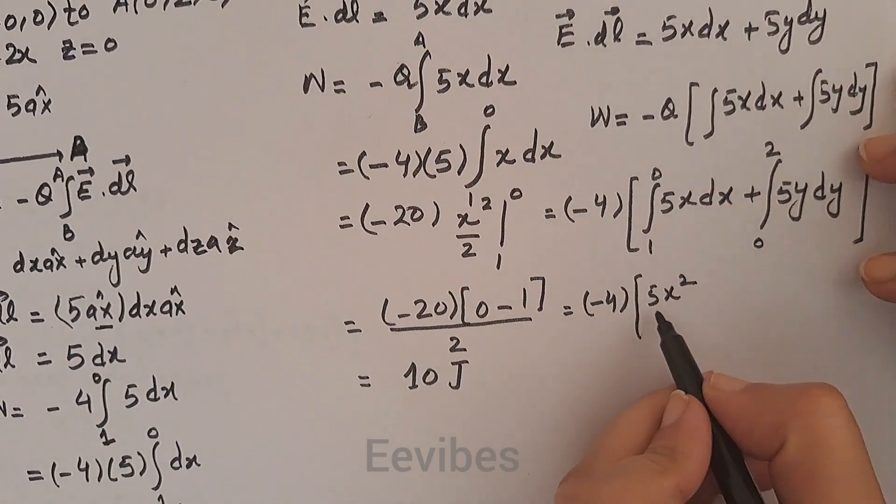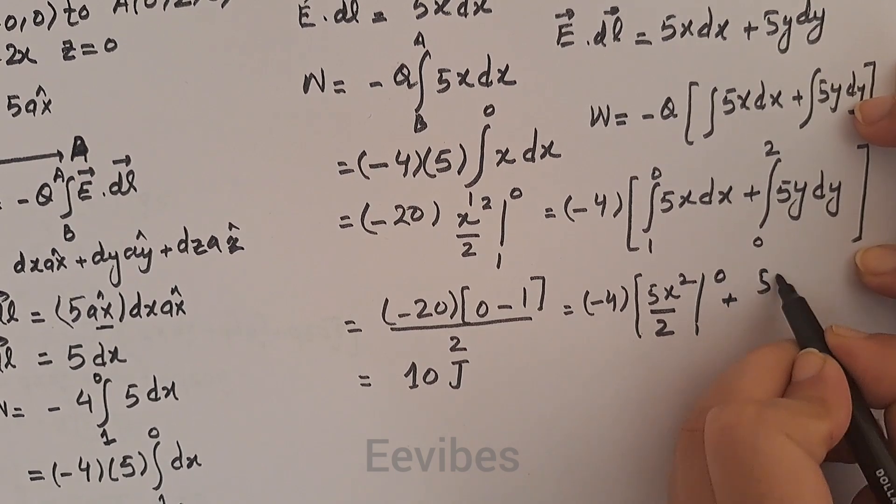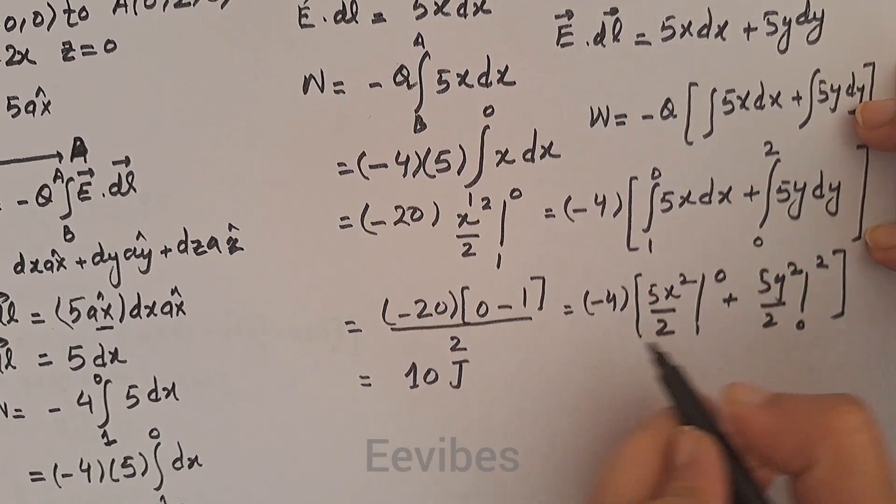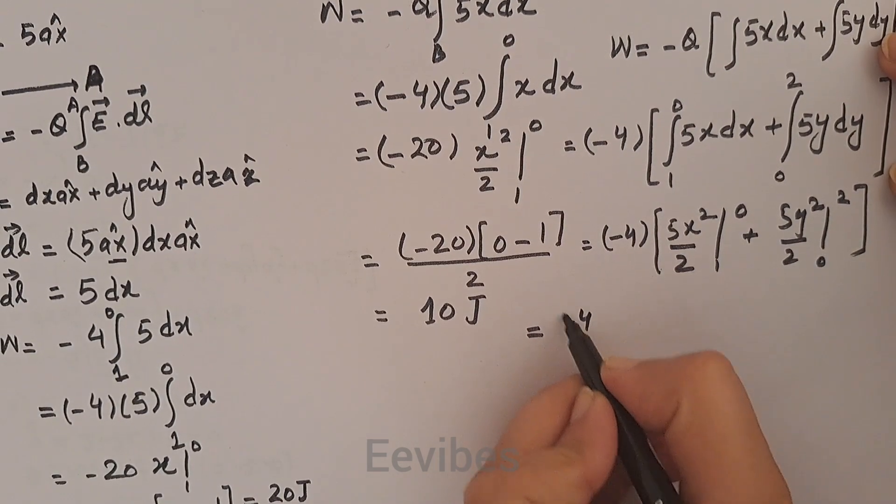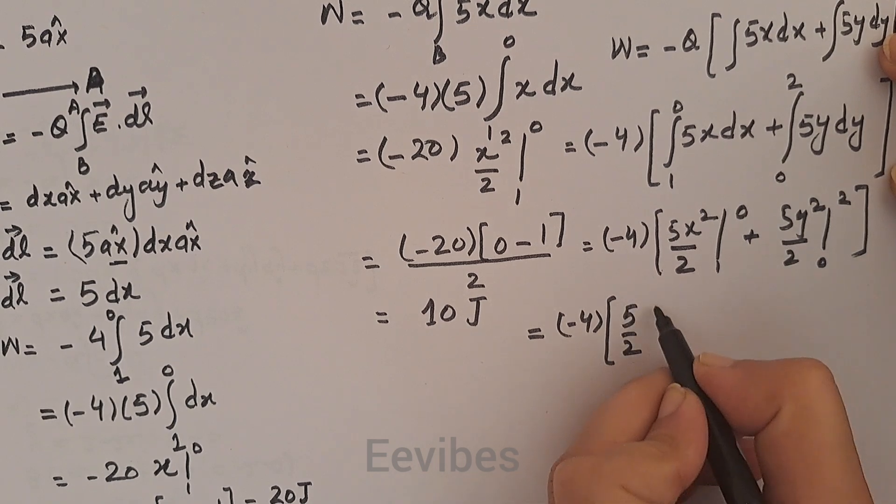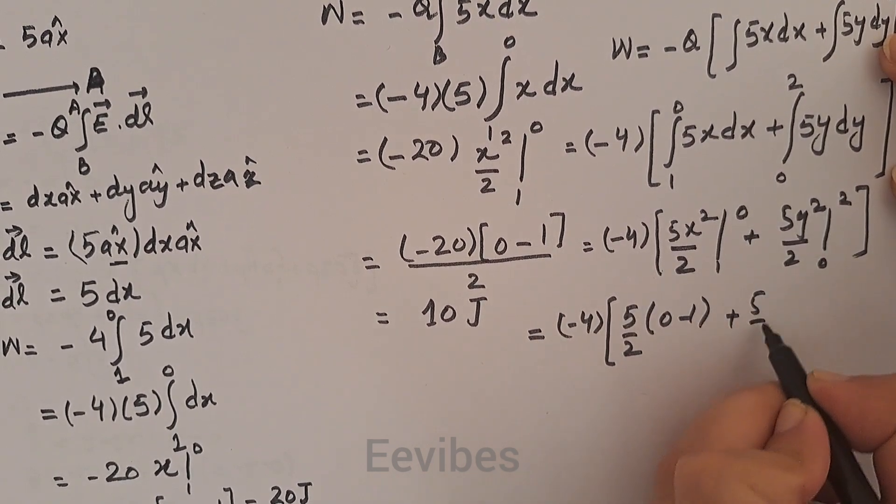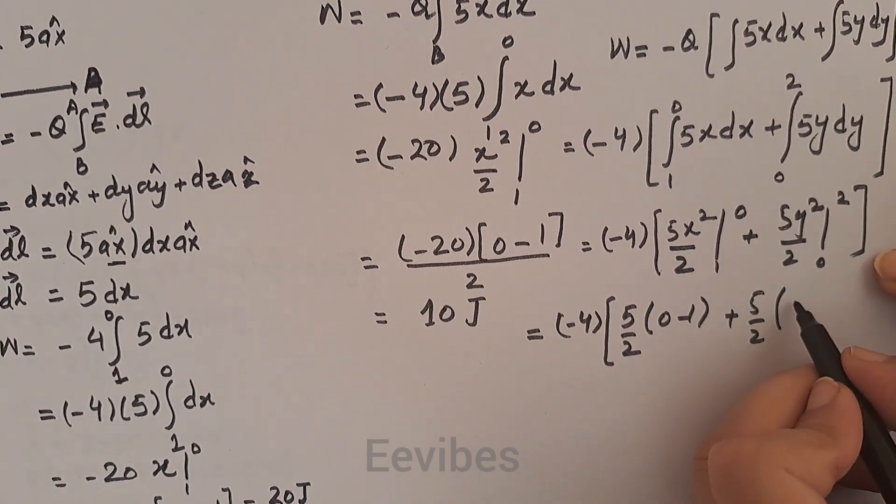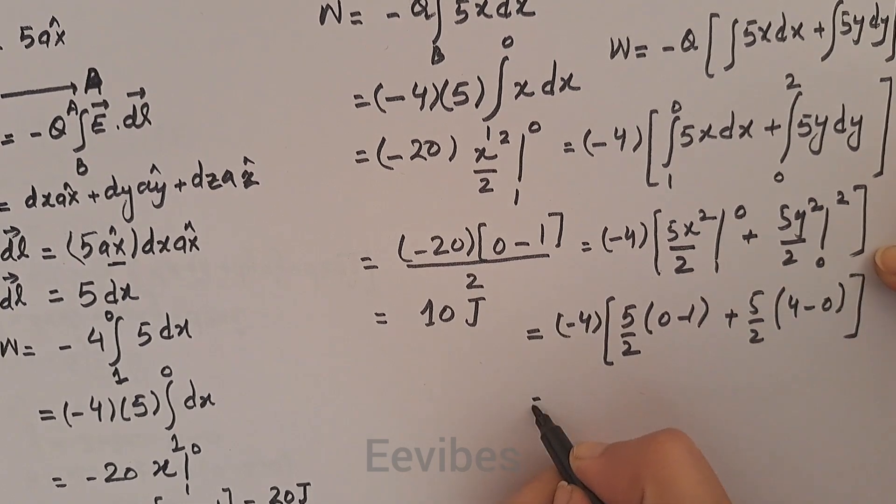-4 from the formula, and we will have 5x²/2 with the limit of 1 to 0, plus 5y²/2 with the limit of 0 to 2. Let's simplify it, so it becomes -4 outside the bracket. Inside the bracket you will have 5/2 and 0 minus 1, then plus 5/2 and again you will have the limit of y², which means 2² which is equal to 4 minus 0.